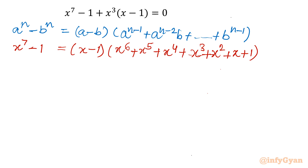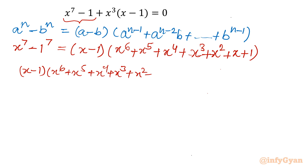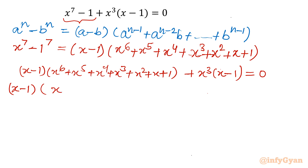Putting the value, x power 7 minus 1 expands as x minus 1 times x power 6 plus x power 5 plus x power 4 plus x power 3 plus x power 2 plus x plus 1. Once I take x minus 1 common, it will be left with x cubed.